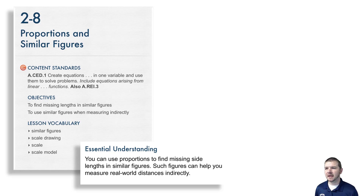The essential understanding: you can use proportions to find missing side lengths in similar figures. Such figures can help you measure real-world distances indirectly.